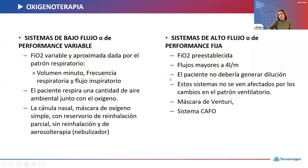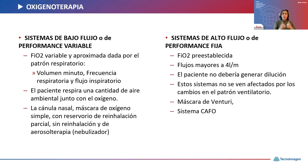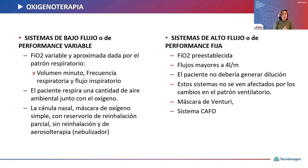Para eso vamos a elegir distintos tratamientos de oxigenoterapia. Los sistemas de bajo flujo, de performance variable: la FIO2 es variable y aproximada porque el patrón respiratorio incorpora aire ambiente, diluyendo la FIO2. Entre estos sistemas están la cánula nasal, la máscara simple, las máscaras con reservorio de reinhalación parcial y sin reinhalación, y las máscaras de aerosol. Los sistemas de alto flujo, de performance fija: FIO2 preestablecida con flujos mayores a 4 litros por minuto, no afectados por cambios en el patrón ventilatorio. Entre estos se encuentran la máscara de Venturi y el sistema de alto flujo.